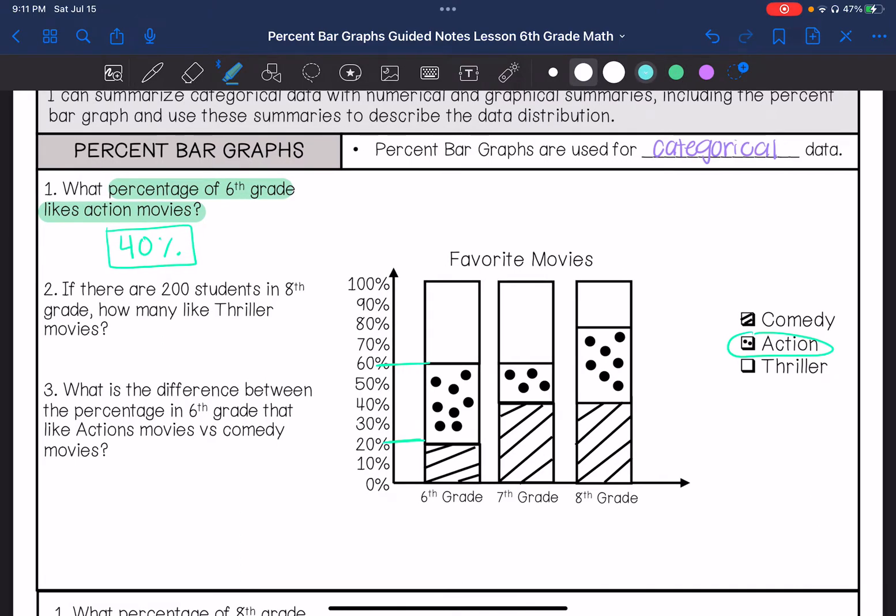If there are 200 students in eighth grade, how many like thriller movies? So if there are 200 students in eighth grade, the ones that like thriller are from 80 to 100%, so that is 20%. I multiply by 2 to get 200, so 20 times 2 is 40, so this is going to be 40 students.